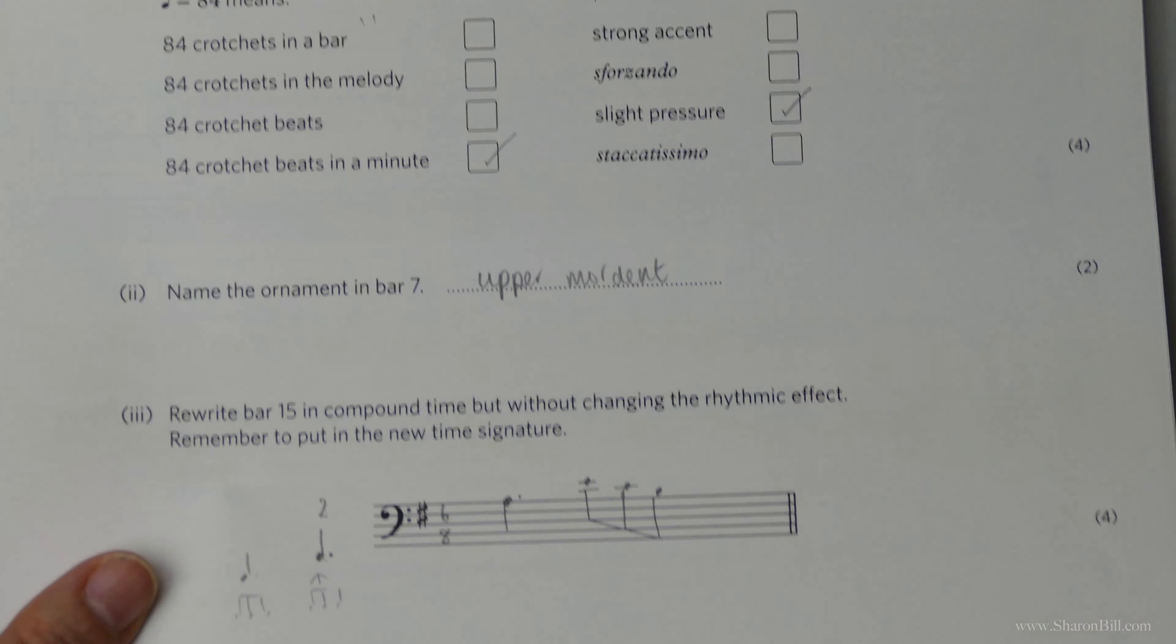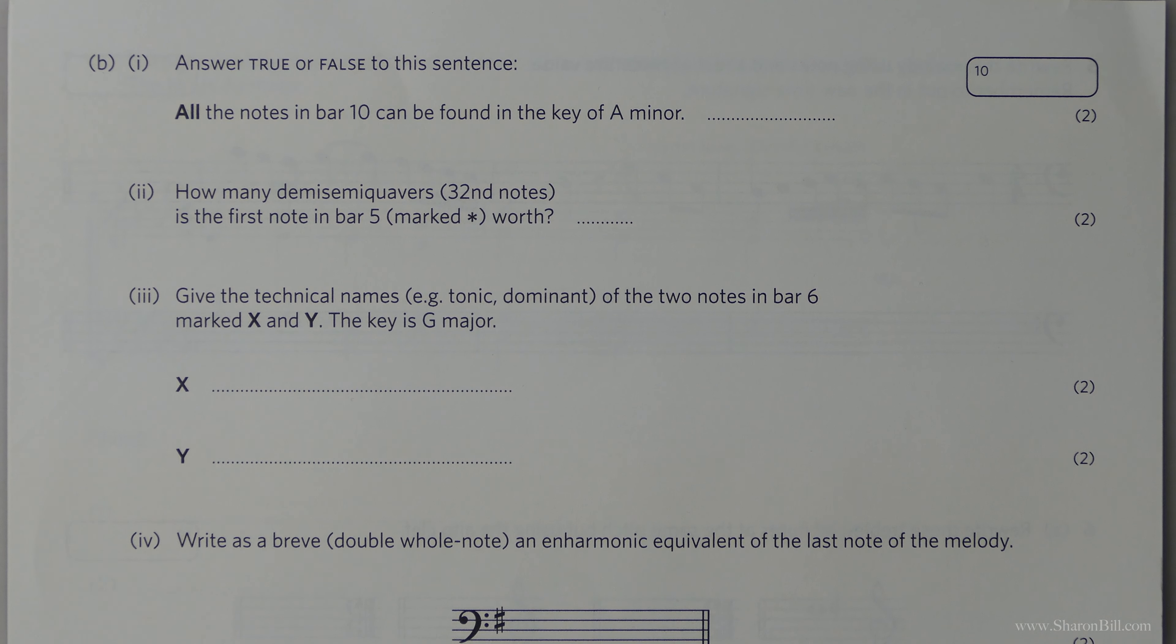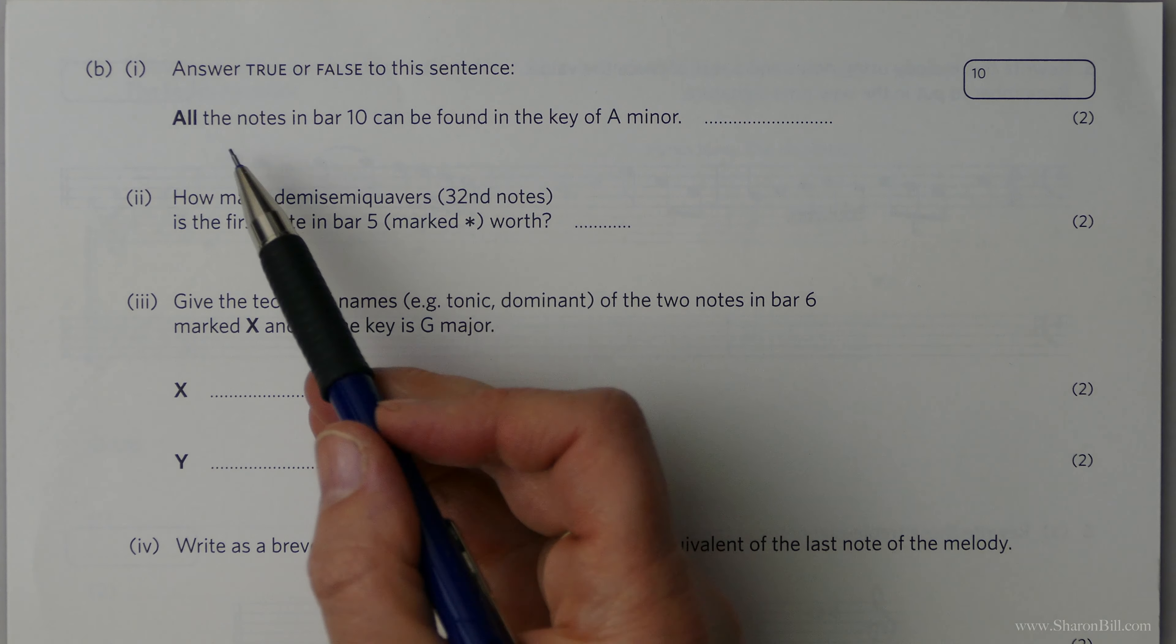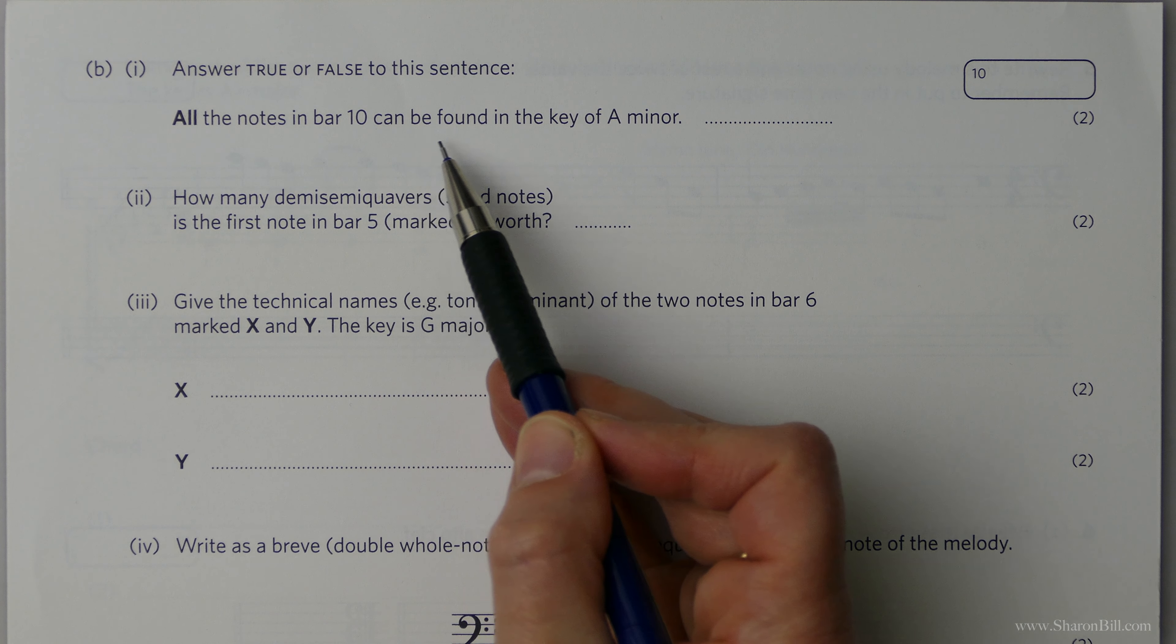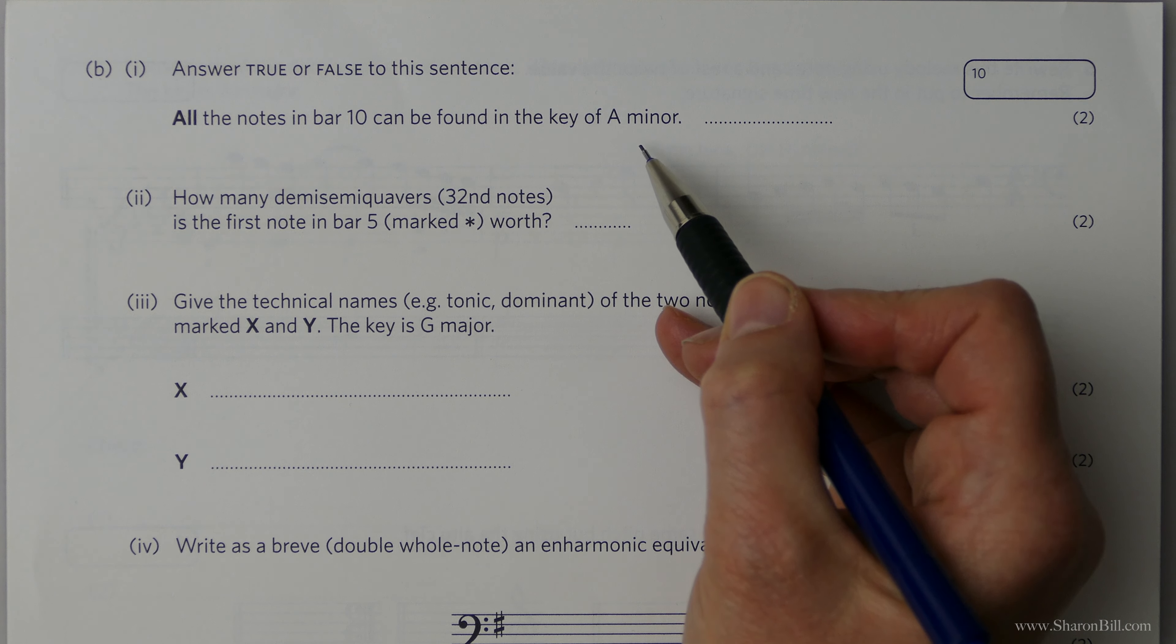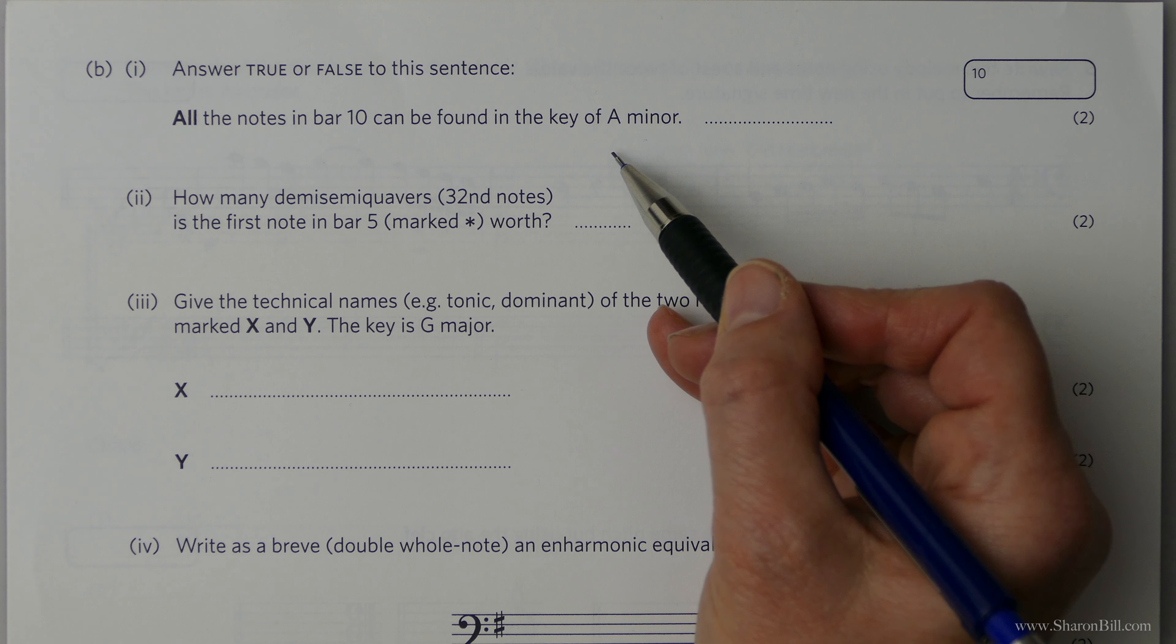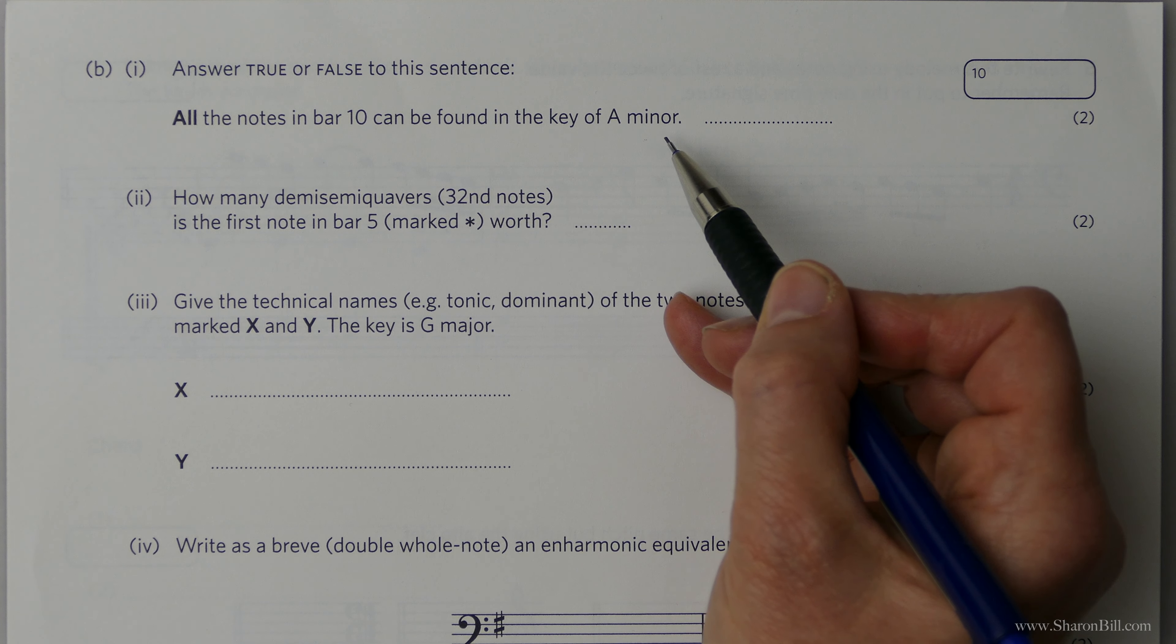So moving on to the next page, but keeping this page handy to refer back to. Is it true or is it false that all the notes of bar 10 can be found in the key of A minor? Now, A minor is related to C major, which would have a key signature of nothing, no sharps, no flats. But then don't forget, we could have the harmonic minor form or the melodic minor form where the sixth and seventh could be raised. The seventh is raised in the harmonic minor form. And in the ascending melodic minor, the sixth and the seventh is raised.